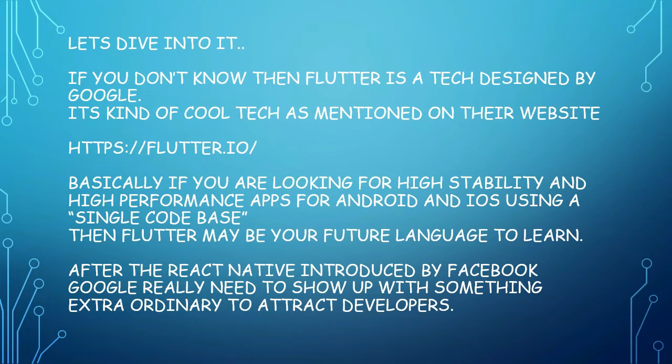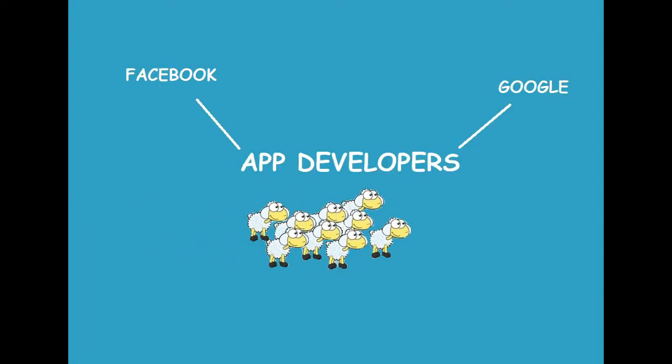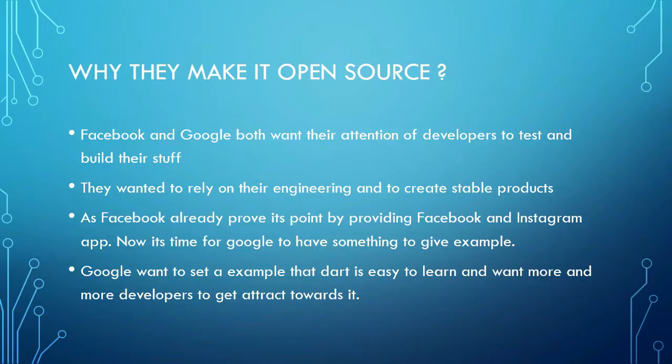After React Native was introduced by Facebook, Google really needed to show up with something extraordinary to attract developers. So Google introduced Flutter, which is open source — similar to React Native — because they wanted developers' attention. They really wanted a stable product built upon their language, Dart. We know that using React Native, Facebook already created their own application, as well as Instagram, and Google is also looking to have such applications in the market as an example.